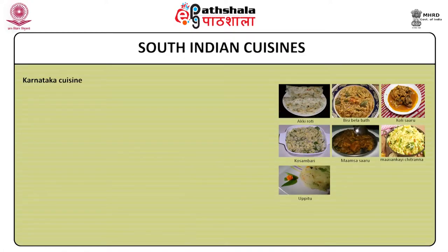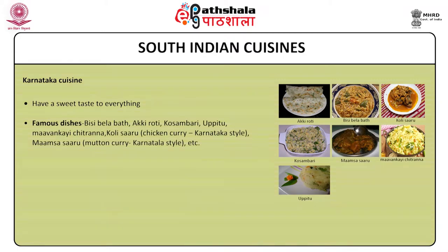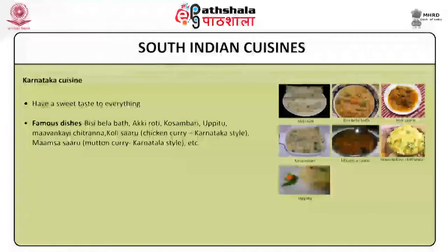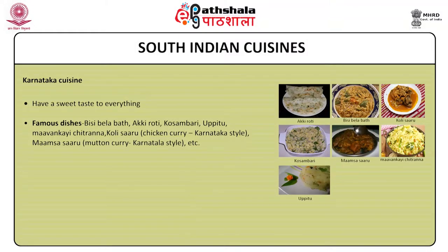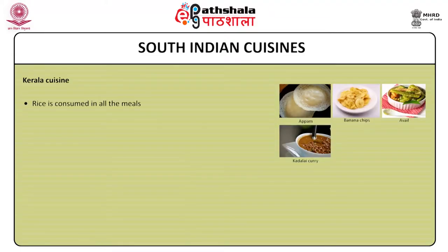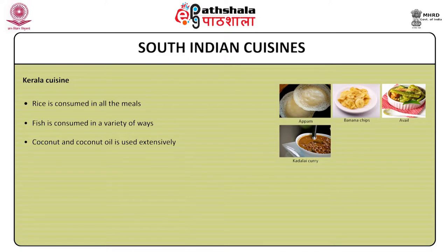Karnataka cuisine: Karnataka dishes have a sweet taste. Some famous Karnataka recipes include bisibelebath, akki roti, kosambari, upittu, chitrana, koli taru i.e. chicken curry Karnataka style, mutton curry Karnataka style etc. Kerala cuisine: rice is consumed in all meals in one form or another. Fish is consumed in a variety of ways. Coconut and coconut oil are used extensively in Kerala cuisine. Famous dishes of Kerala include appam, avial, banana chips, kadala curry etc.